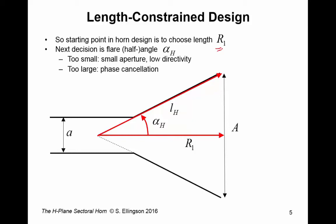And then, the next decision is this flare angle, alpha sub H, which I've indicated here, which is one of the angles in this right triangle that I pointed out earlier. Now, if the angle is too small, then we'll have a small aperture, which is not good for directivity. But if alpha sub H is too large, then we expect to see phase cancellation and reduction in directivity through that mechanism.